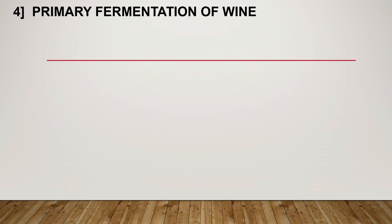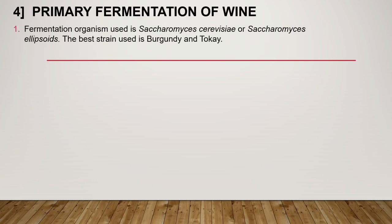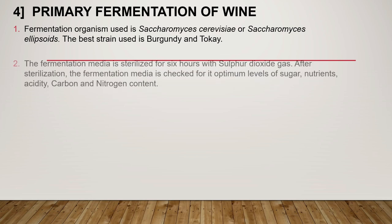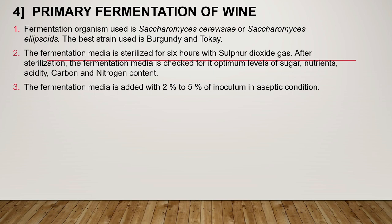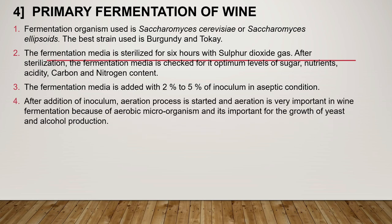Fourth, primary fermentation of wine: the fermentation organism used is Saccharomyces cerevisiae or Saccharomyces ellipsoids. The best strains used are Burgundy and Tokay. The fermentation media is sterilized for 6 hours with sulfur dioxide. After sterilization, the fermentation media is checked for optimum levels of sugar, nutrients, acidity, and carbon and nitrogen content. Then the fermentation media is inoculated with 2–5% of inoculum under aseptic conditions. After addition of inoculum, the aeration process is started, which is very important for the growth of yeast and alcohol production.